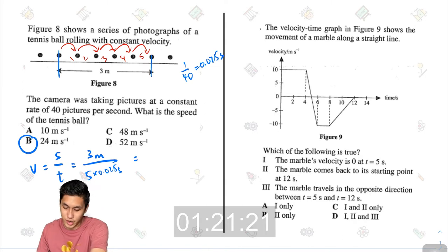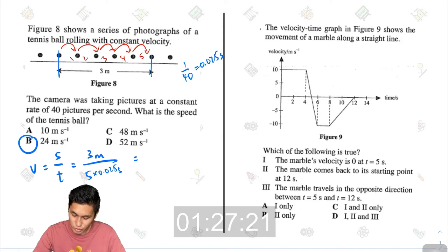The second question. The velocity time graph in figure 9 shows the movement of a marble along a straight line. Which of the following is true? Number 1, the marble's velocity is 0 at t equals 5 seconds. When t equals 5 seconds, that will be right about here. So the velocity, yes, that is 0. Number 1 is correct.